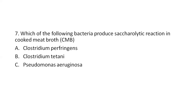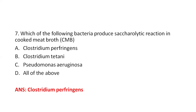Next question: Which of the following bacteria produce a saccharolytic reaction in CMB (cooked meat broth)? Option A, Clostridium perfringens. Option B, Clostridium tetani. Option C, Pseudomonas aeruginosa. Option D, all of the above. The right answer is Clostridium perfringens, a saccharolytic bacteria that turns meat pieces red in CMB. Clostridium tetani is a proteolytic bacteria that turns meat pieces black. Pseudomonas aeruginosa is aerobic, whereas Clostridium species are anaerobic.